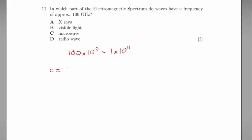C equals F lambda. The speed of light is equal to frequency multiplied by the wavelength. So we can rearrange that to get lambda equals C divided by F. And C here is 3 times 10 to the power of 8.